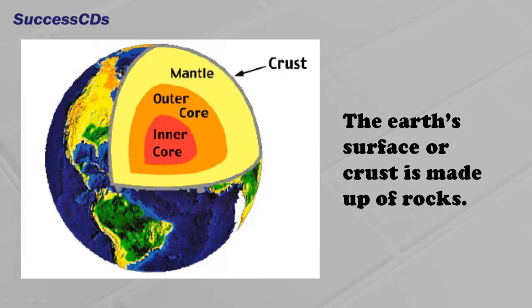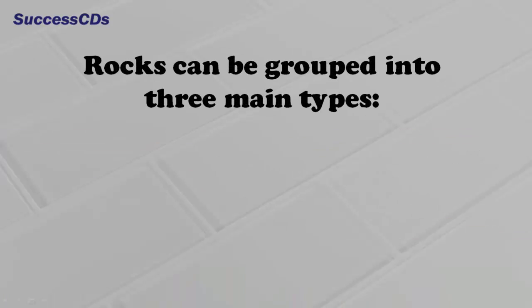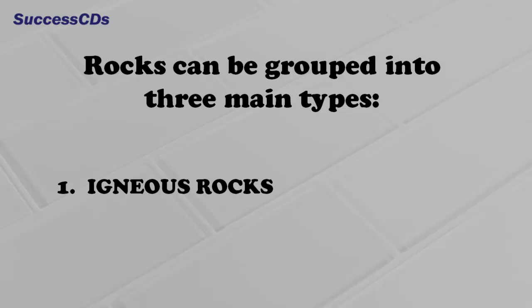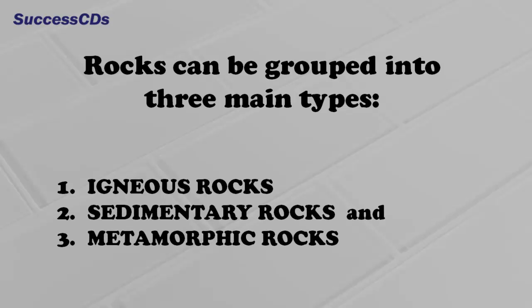Our planet Earth is made up of rocks. Rocks are a combination of different kinds of minerals. They occur in many varieties and colors. Rocks can be grouped into three main types: igneous rocks, sedimentary rocks, and metamorphic rocks.